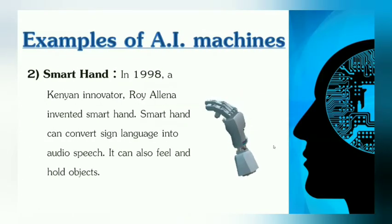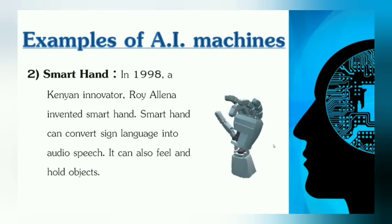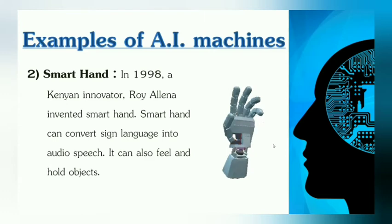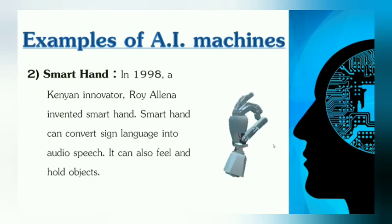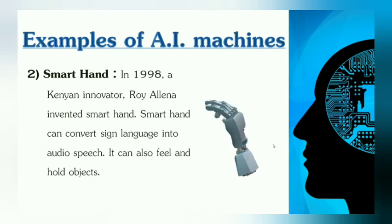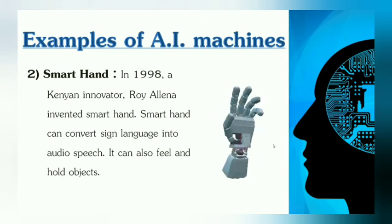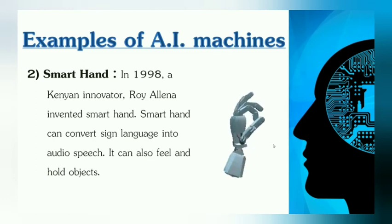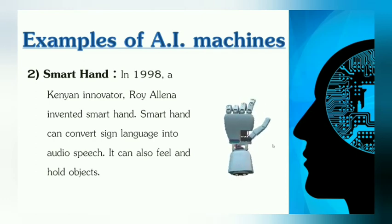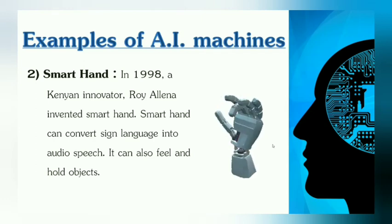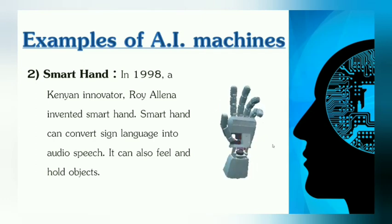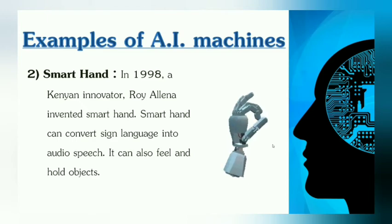The second is the smart hand. In 1998, a Kenyan innovator, Roy Alina, invented the smart hand. The smart hand can feel and hold objects. It can also convert sign language into audio speech.